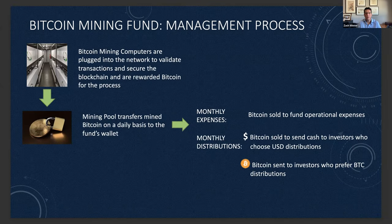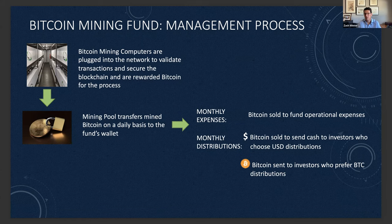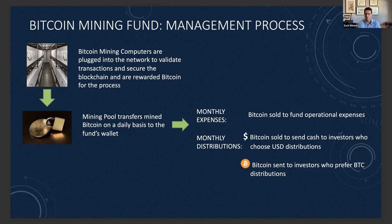The Bitcoin mining fund process works as follows: Bitcoin mining computers are plugged into the network to validate transactions and secure the blockchain, and they're rewarded Bitcoin for the process. The Bitcoin mining pool transfers our mined Bitcoin each day to the fund's Bitcoin wallet. At the end of each month, we look at our monthly expenses, sell the Bitcoin necessary to pay for expenses, and the remainder is distributed — investors have the option of receiving distributions in U.S. dollars or in Bitcoin.